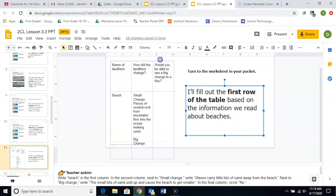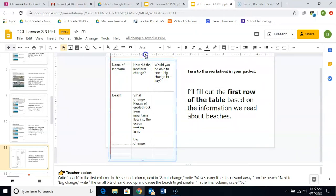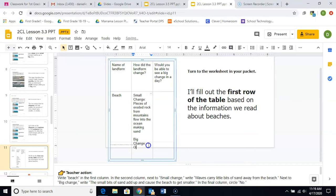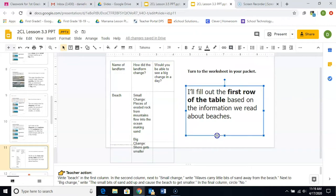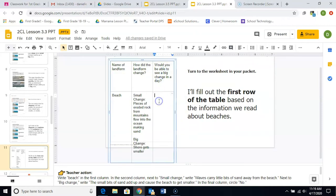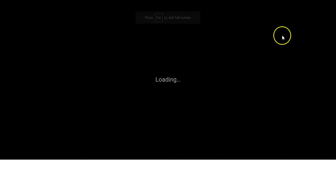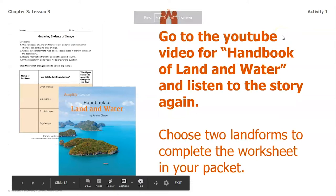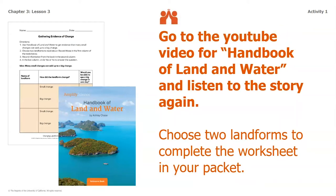Our big change is that over time the shore gets smaller. The last thing is: would you be able to see this big change in one day? When thinking about these little pieces of rock, this is not going to happen in one day. As the water is flowing and the waves are going, that is what's creating the shore to get smaller, so it's going to take a long time — I'm going to put no. Now you're going to go to the YouTube video for the handbook of land and water, choose two landforms to complete the worksheet, and then come back for the second activity.